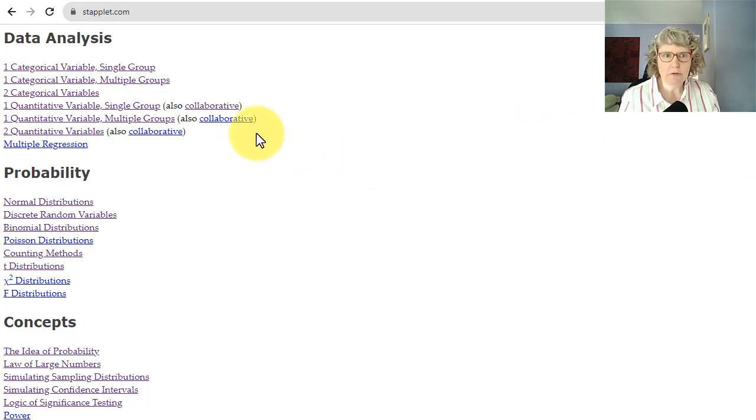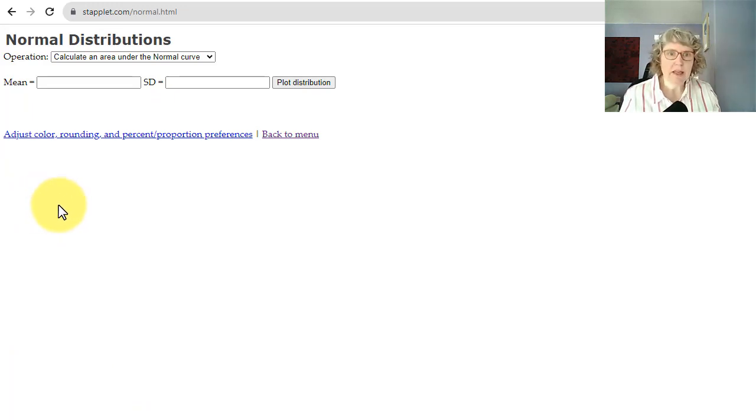So let's go over to staplet. I went to the main page because I know you've been here before, so I want to show you where it is. We've been in data analysis, but now we're going into probability. You can see there's lots of different names of distributions. That's why we need to specify which one it is. So on the normal distribution app of staplet, there's two different operations. The first one is calculating an area under the normal curve. That's what we want first. That's a probability. The second one is calculating a value that corresponds to an area. So that's the inverse or the reverse.